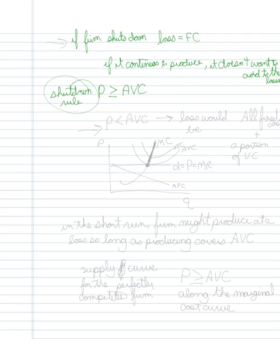And that is essentially our shutdown rule. If the price were less than the average variable cost, then the loss would be all the fixed costs plus a portion of the variable cost. Here they would be better off shutting down, because here they're just going to lose all their fixed costs. If they're charging something less than the average variable cost, they're losing both their fixed costs as well as their variable costs.